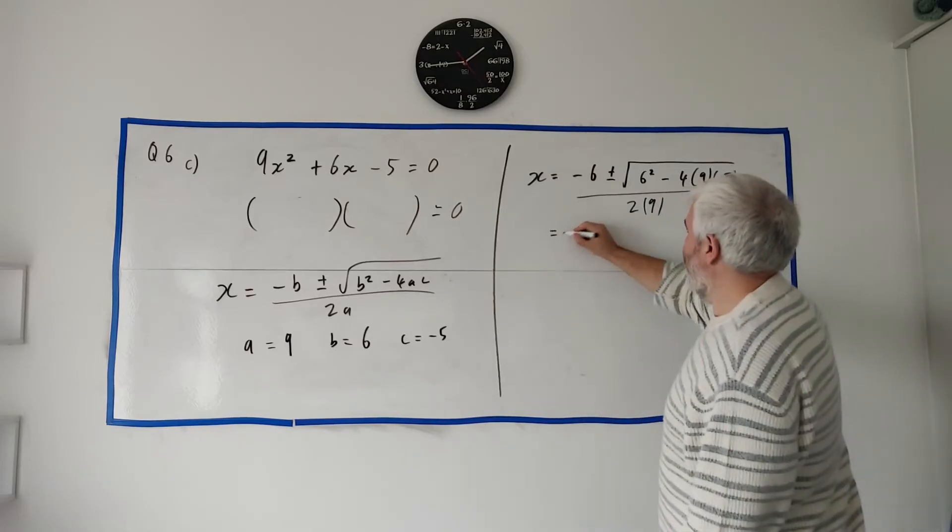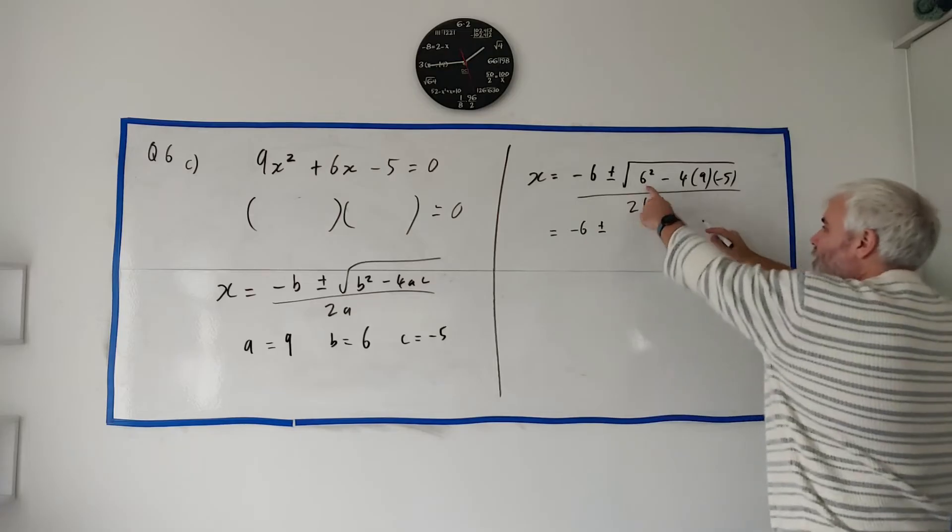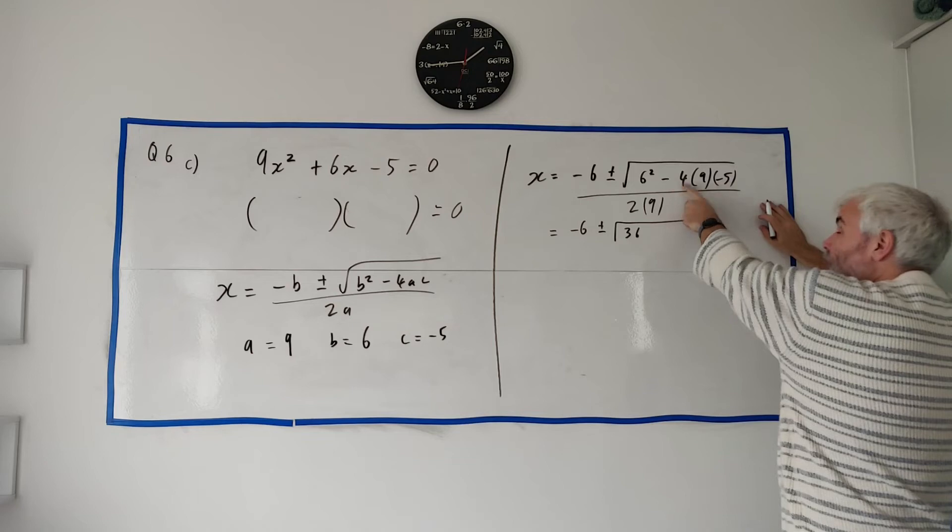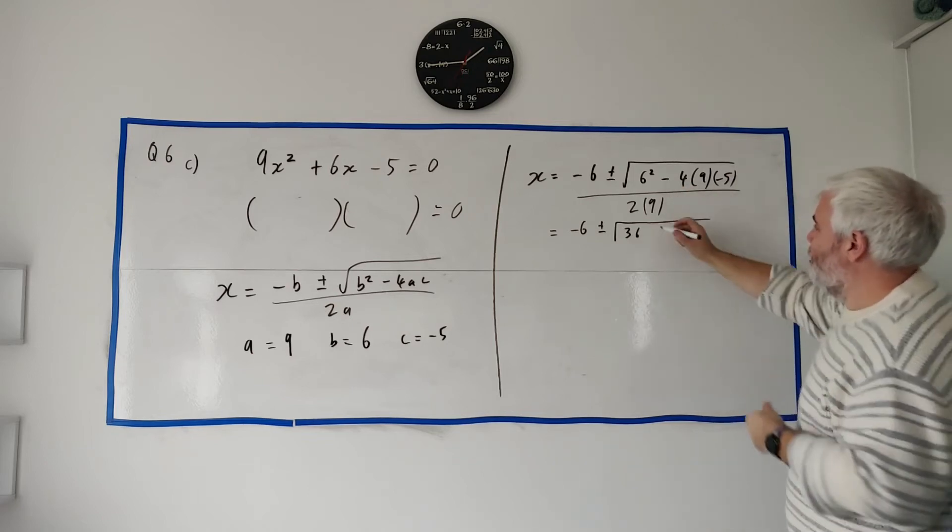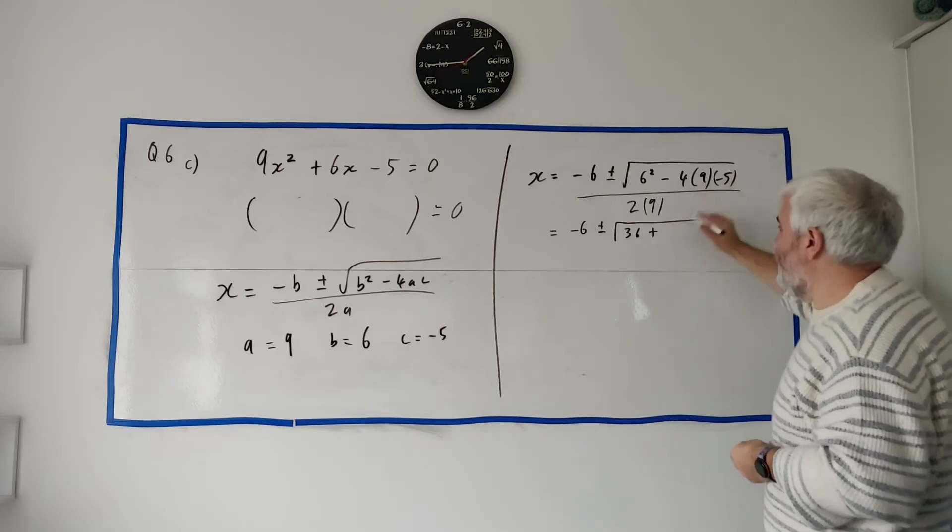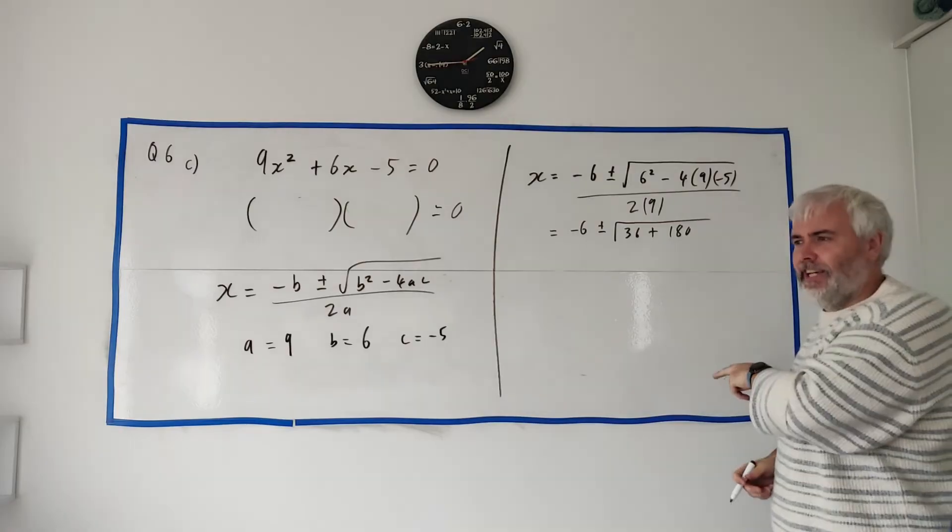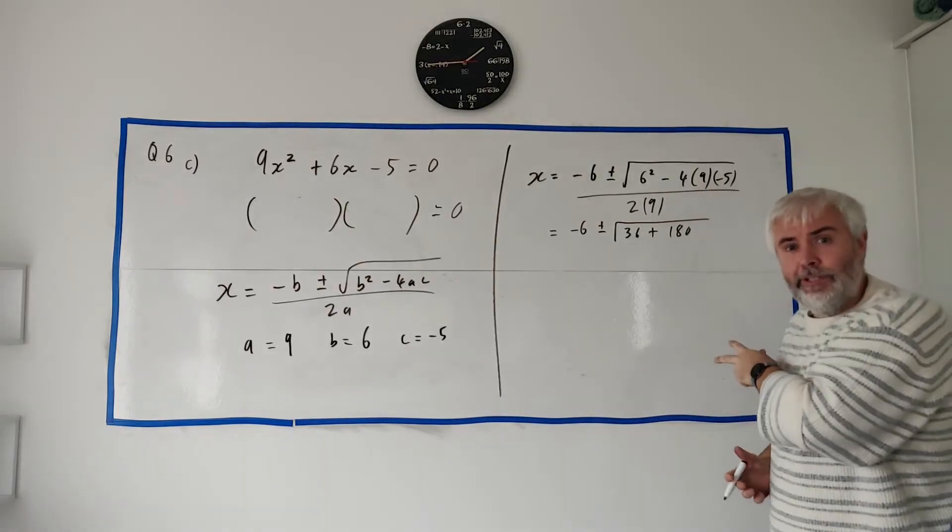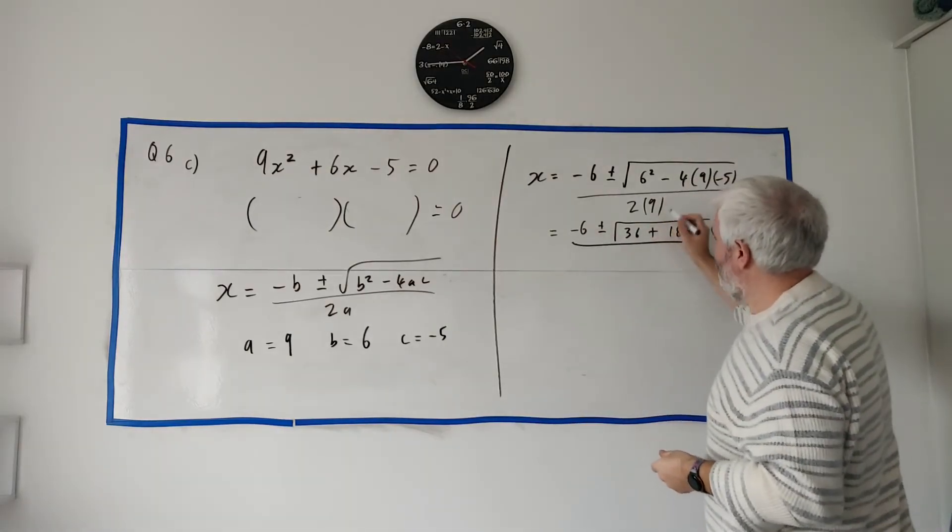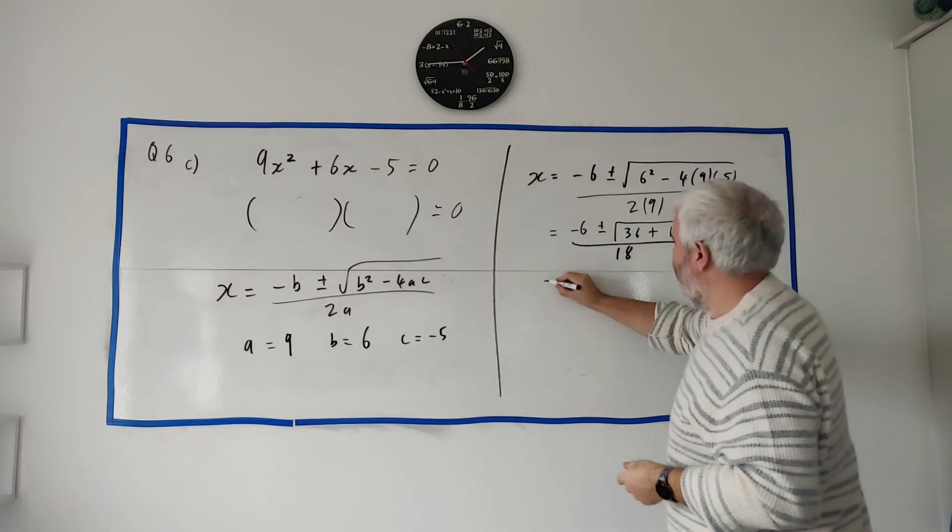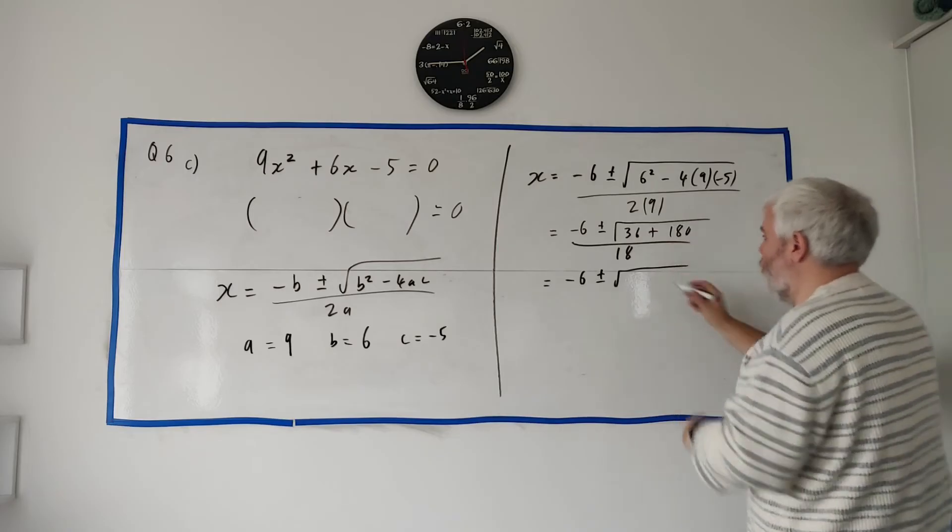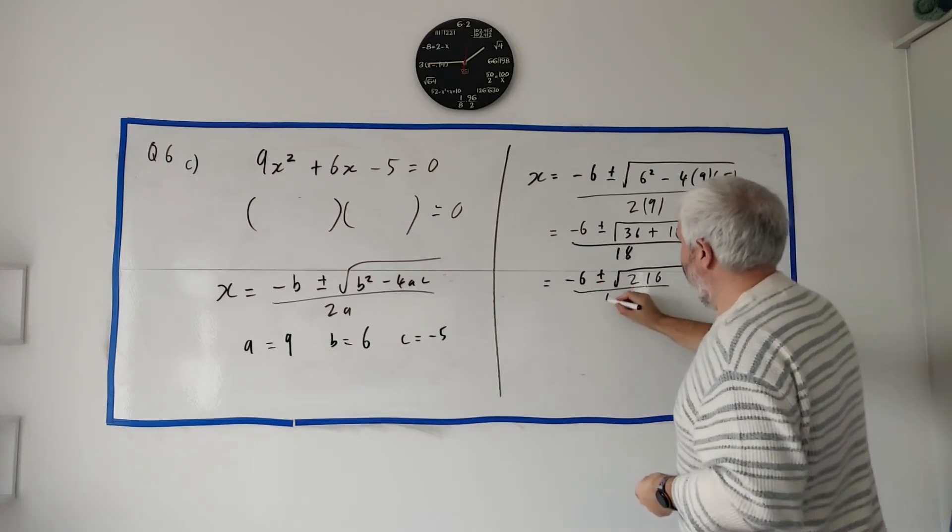All right, let's start cleaning that up. Write this again. -6 plus or minus. This is 36. Go ahead and do this in a calculator. If you can't do it in your head, minus by minus gets a plus. 4 times 5 is 20. 20 times 9 is 180. Don't try and do that in your head in the exam. I wouldn't do this in my head in the exam, even though I'm able to do it. I would just use a calculator, especially in an exam. All this over 2 times 9, 18. Clean it up again. -6 plus or minus the square root of 216, all divided by 18.